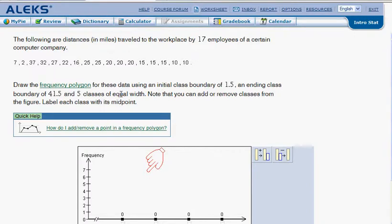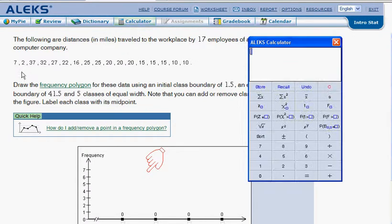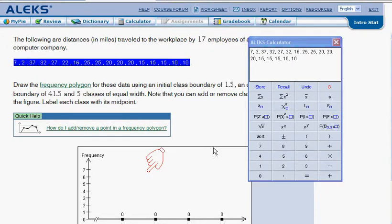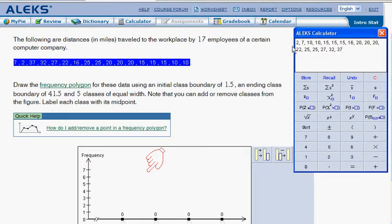As before, what we're going to do is grab our calculator and sort the values that they give us. Pull those values into the calculator, click sort, and get all of your numbers sorted out from small to large. In this case, notice that we're going to have an initial class boundary of 1.5, an ending class boundary of 41.5, and they tell us this time that there are five classes.